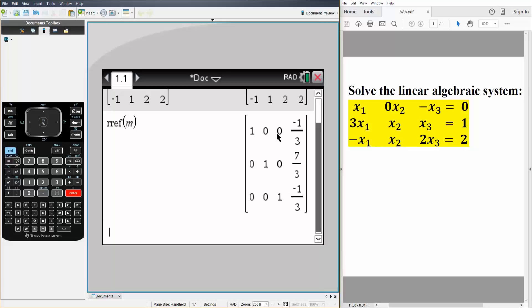And that's all we need to do to solve using row reduced echelon form.